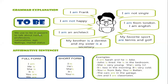We use the verb to be in present to talk about names, professions, nationalities, age, feelings, and marital status. Utilizamos el verbo to be en el presente para hablar acerca de nombres, profesiones, nacionalidades, edad, sentimientos o estado marital. For example, this man says: I am not single. I am from London. I am English. My favorite sport are tennis and golf. My brother is a dentist and my sister is a secretary. I am an architect. I am not happy. I am Frank.